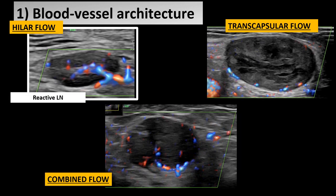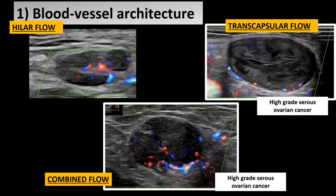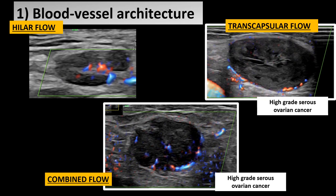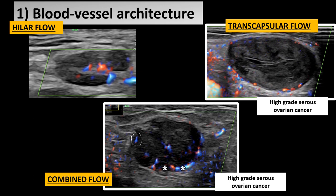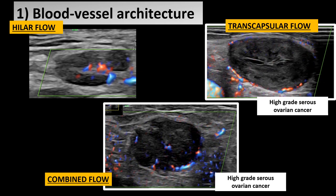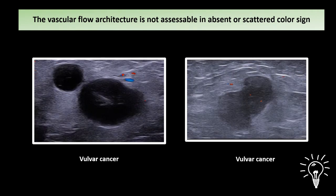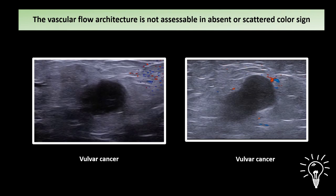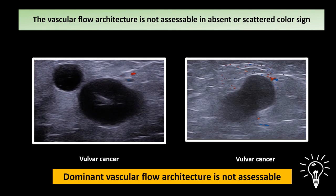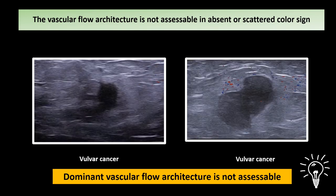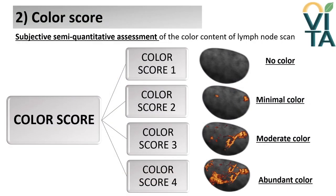The lymph node with only hilar flow is completely benign, while the presence of transcapsular vascularization in transcapsular or combined dominant architecture is explained by neoangiogenesis and neovascularization due to metastatic infiltration — demonstrated in two cases of high-grade serous ovarian cancer. In two metastatic lymph nodes from vulvar cancer, vessels are not visible in their entirety and their origin cannot be determined, so the vascular dominant architecture is not accessible. The color score is a subjective semi-quantitative assessment of the color content of the lymph node seen on color or power Doppler ultrasound.